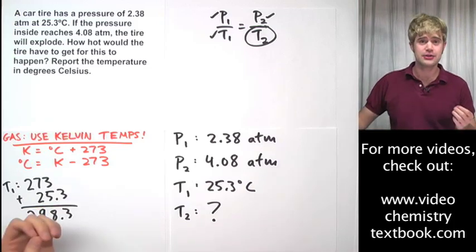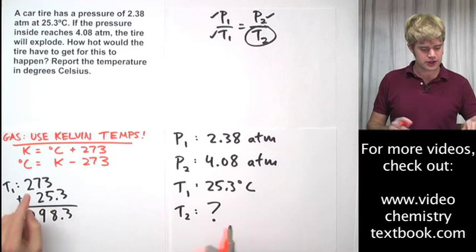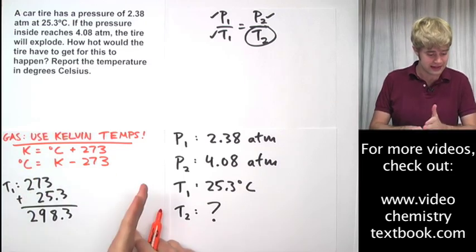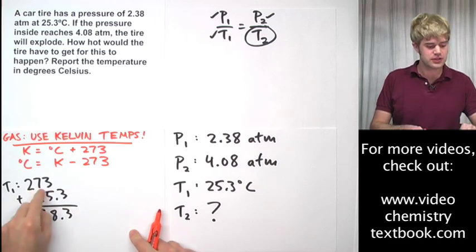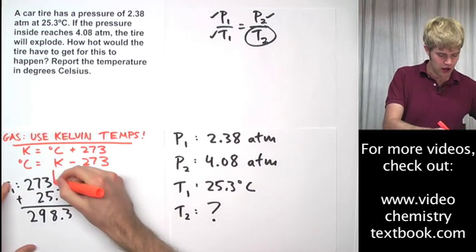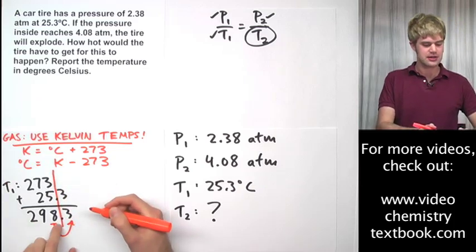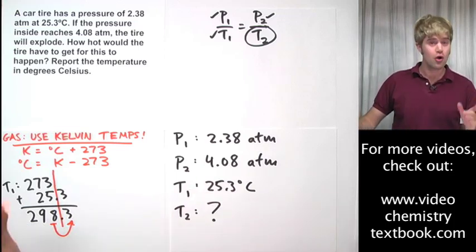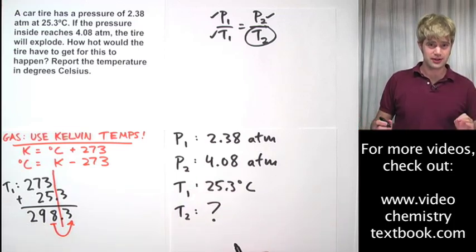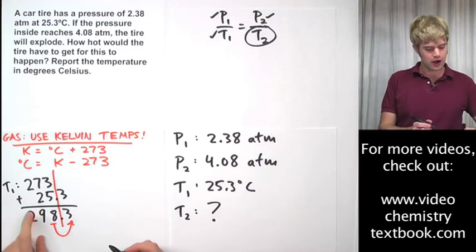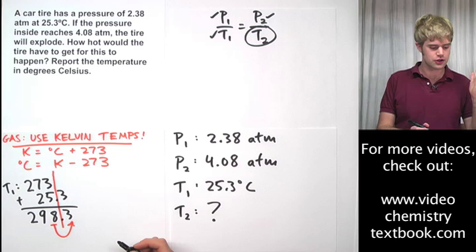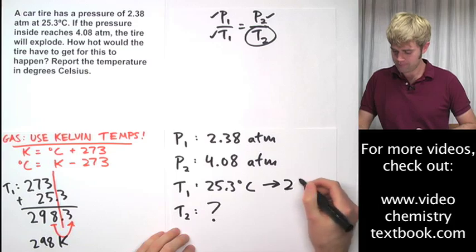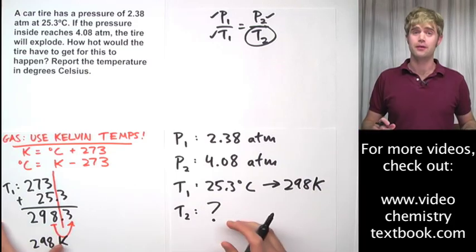Now, remember the rules about adding and subtracting with significant figures. We look which of the numbers has the fewest number of decimal places or the fewest significant figures on the right-hand side. This has one decimal place, 273 doesn't have any. So that means I'm going to draw a line down here and I'm going to round to this digit. I look over here to the 3, so the 8 stays the same, but remember, we have to round using the addition and subtraction significant figures rule. So 298.3, cut it off here, is going to turn into just 298 Kelvin. And that is what I'm going to use for T1.